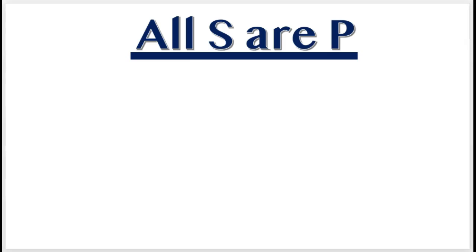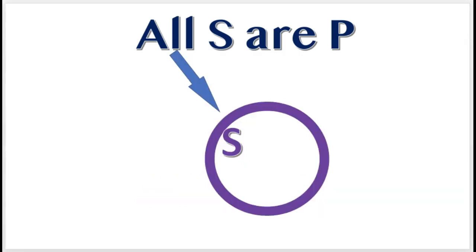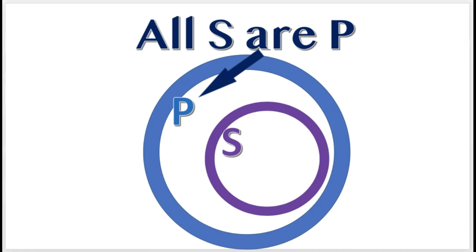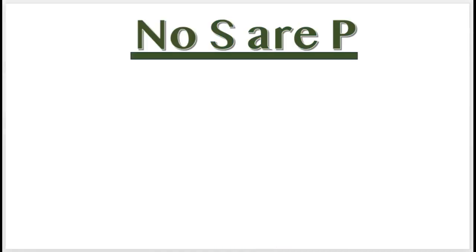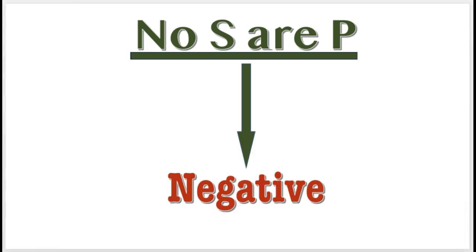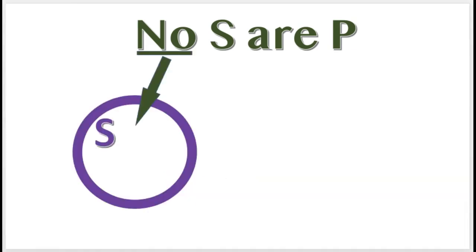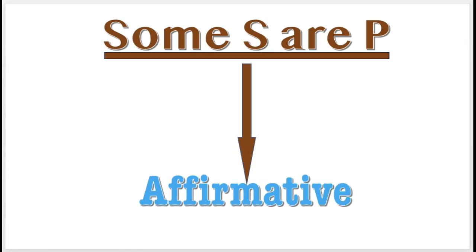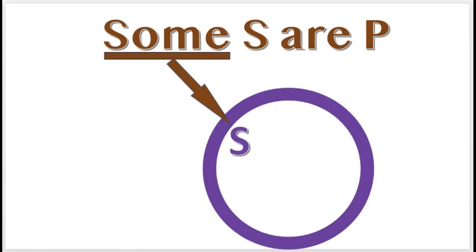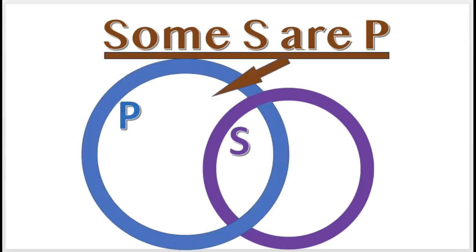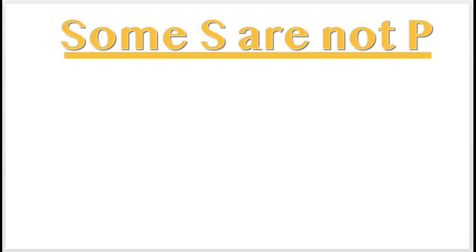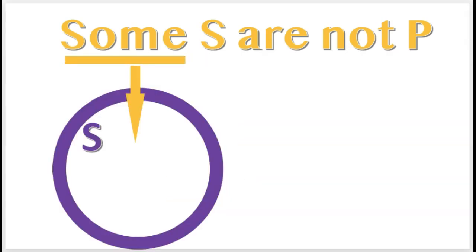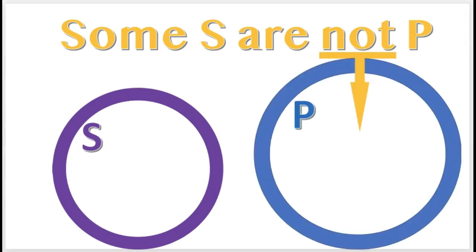All S or P is an affirmative proposition because it claims that every member of S is a member of P. But No S or P is a negative proposition because it claims that no member of S is a member of P. Some S or P is an affirmative proposition because it claims that at least one member of S is a member of P. But Some S or not P is a negative proposition because it claims that at least one member of S is not a member of P.